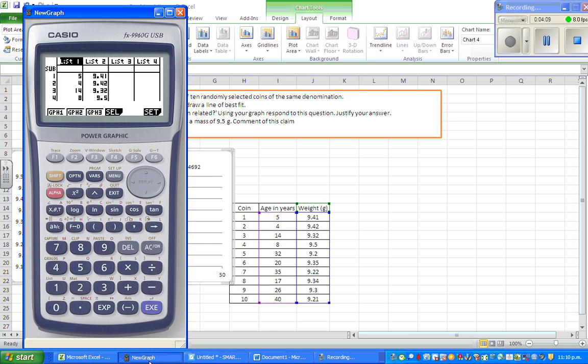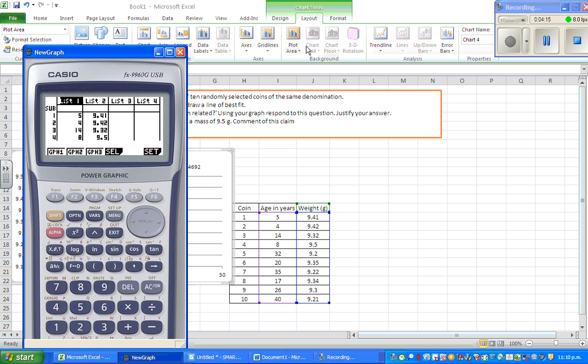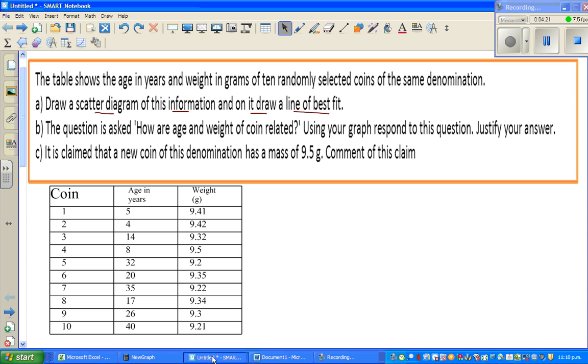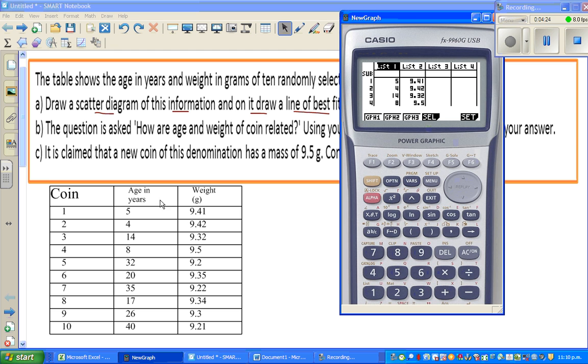So that is negative. Let me make this bigger a bit. And the gradient is negative 0.007 or you can say this is negative 0.07. So if you want to do this on the graphic calculator, what I have done is I have entered the data. So this is my calculator. So this is 5, 9.41, 4, 9.42. So first you have to enter your age or your first variable in list 1, and the second variable in list 2.